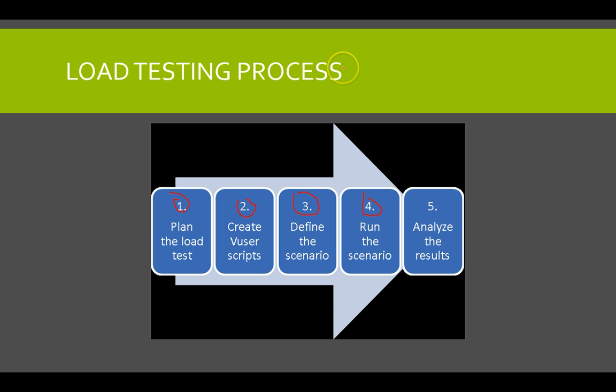Phase five is analyze the results. Now that we have results, we use LoadRunner Analyst to create graphs and reports and to validate the system performance. We want a tool that tells us exactly what's happening, how it's running, and what the outcome is — and the Analyst does that for us.